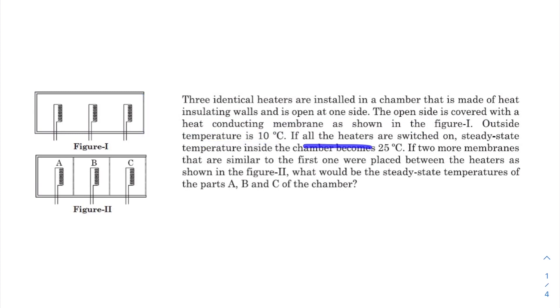Outside temperature is 10 degrees Celsius. If all the heaters are switched on, steady state temperature inside the chamber becomes 25 degrees Celsius. If two more membranes that are similar to the first one were placed between the heaters as shown in Figure 2, what would be the steady state temperatures of parts A, B, and C?